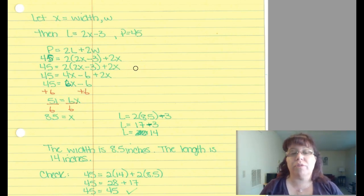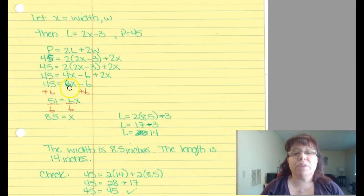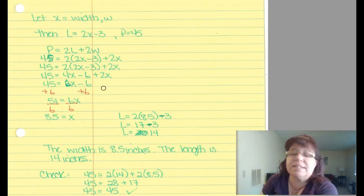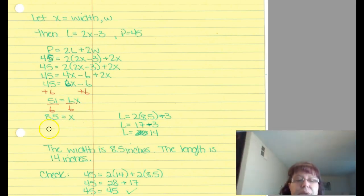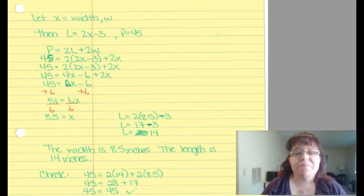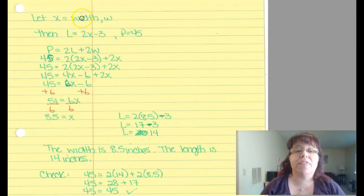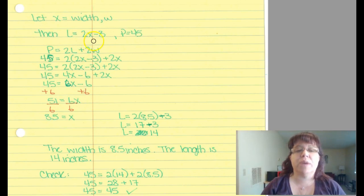After applying the distributive property and adding like terms, we get 45 = 6X − 6. Add 6 to both sides: 51 = 6X. Divide each side by 6: X = 8.5. Now we know X, which represented the width, so the width is 8.5 inches. To find the length, plug 8.5 back into 2X − 3: that gives us 17 − 3, which is 14.